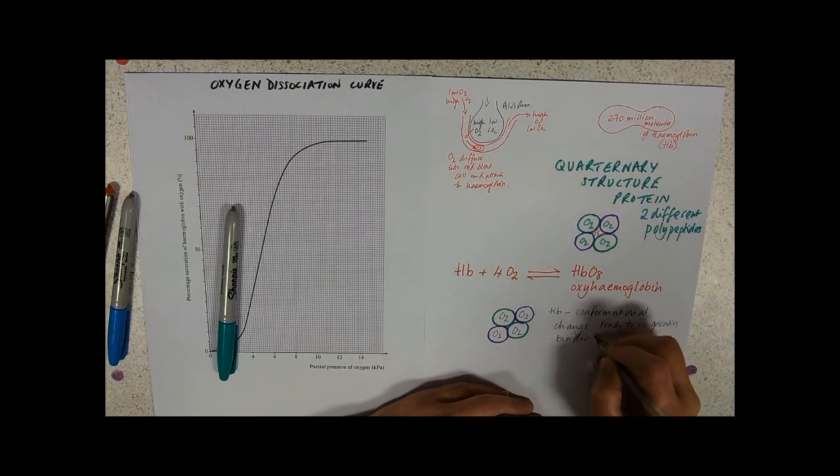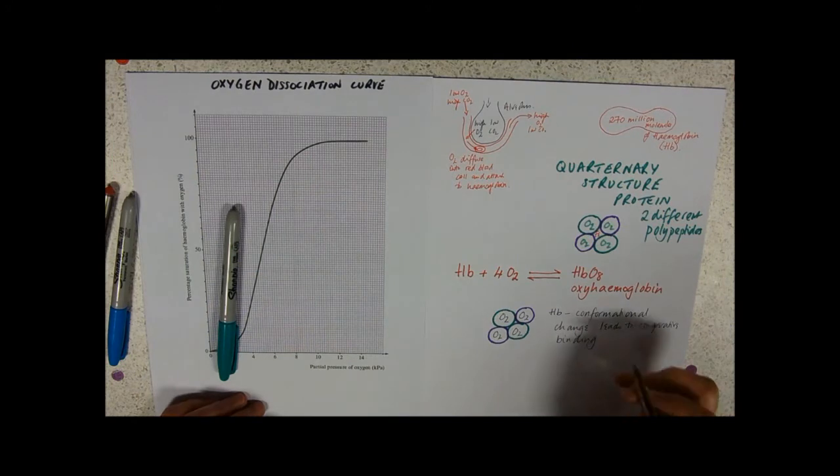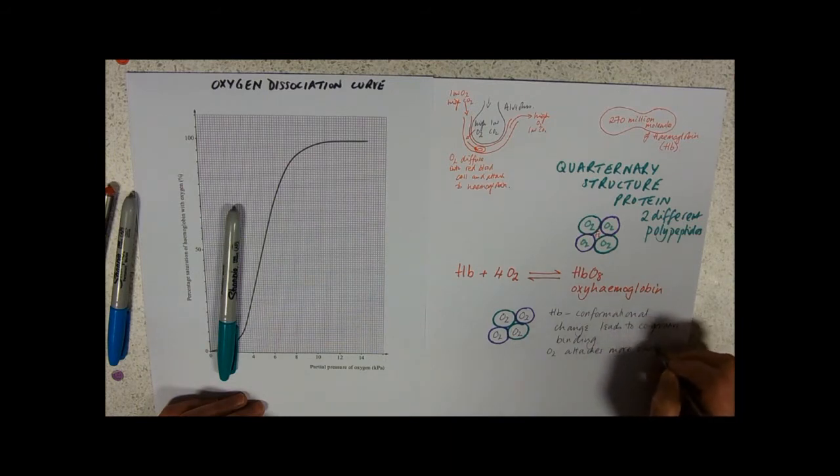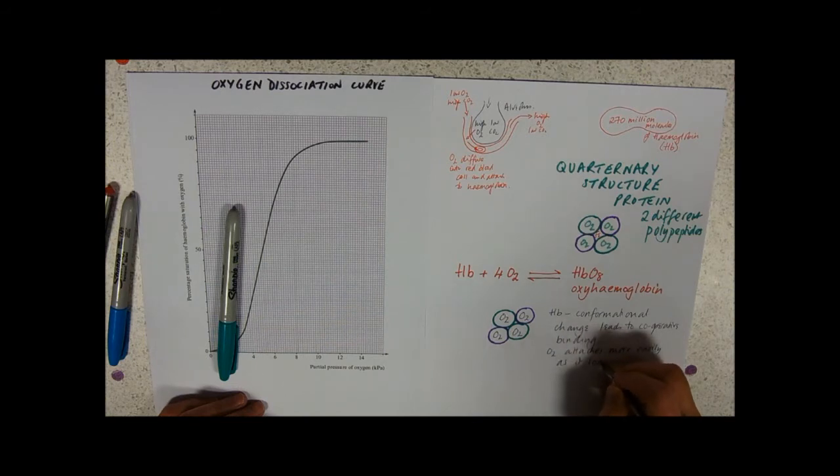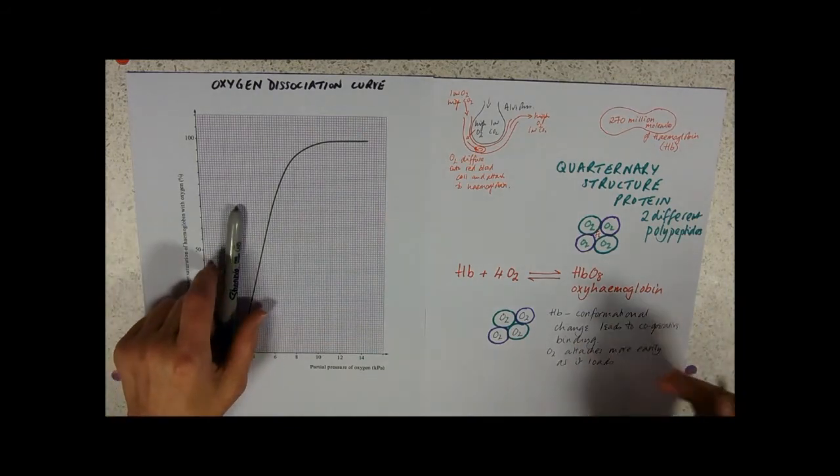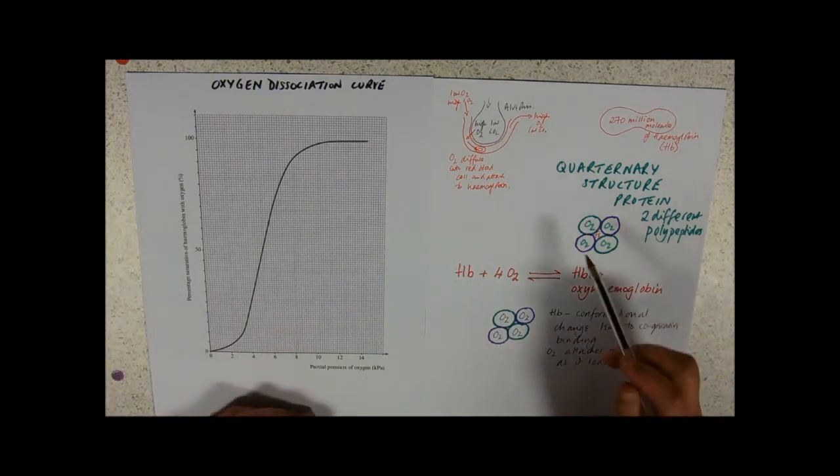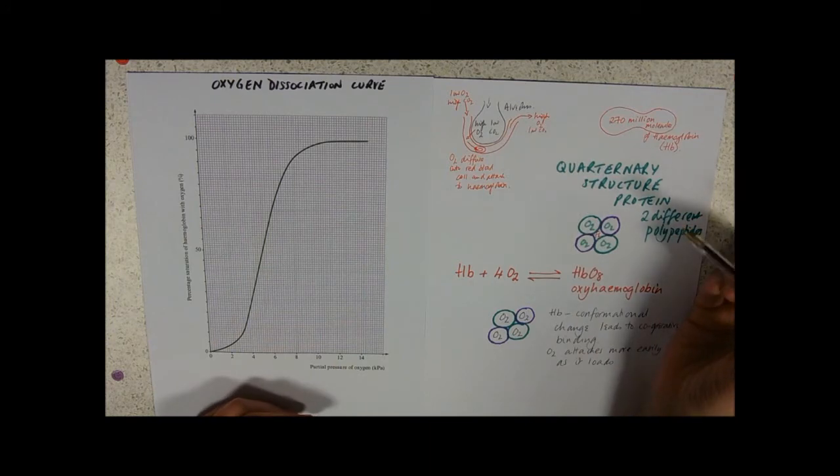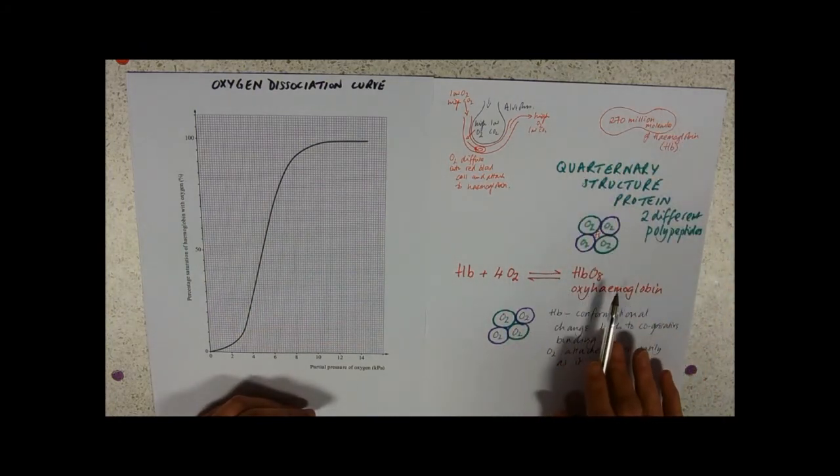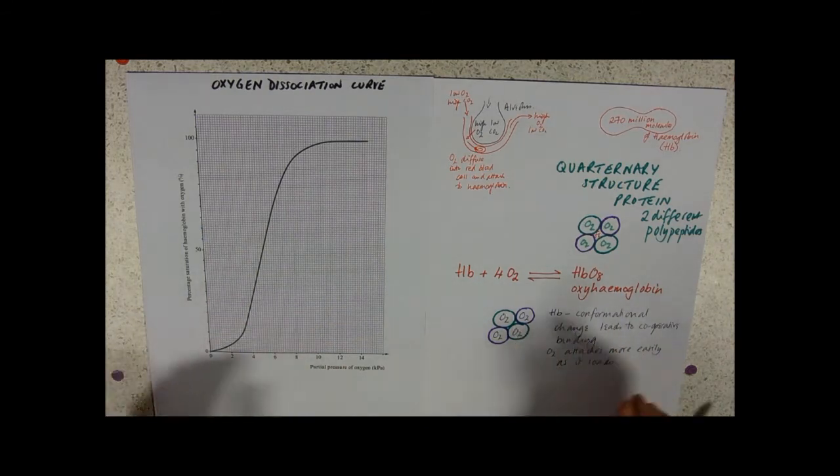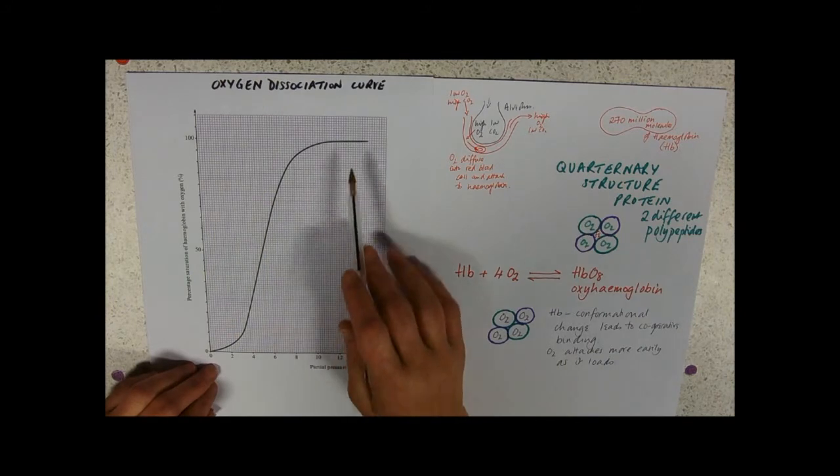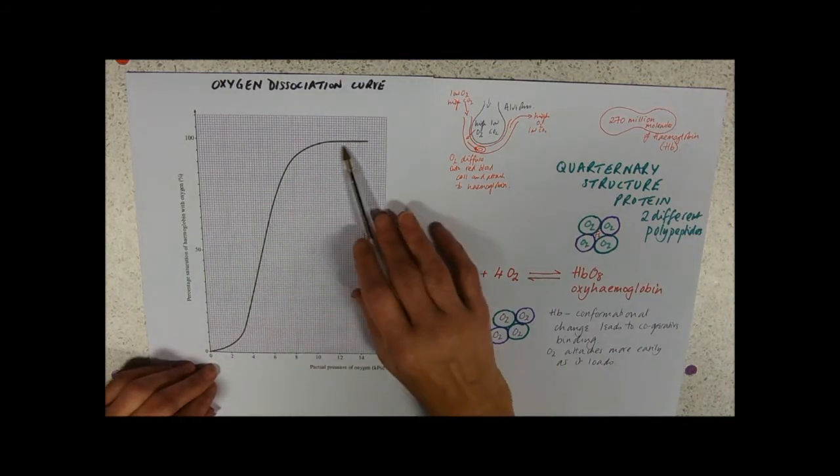Why is that important? Oxygen attaches more easily as it loads. The reason that's important is we can express this relationship between the conditions surrounding the hemoglobin and how much of that hemoglobin has oxygen attached graphically, which is the oxygen dissociation curve. The reason that cooperative binding is important is that it makes that curve S-shaped.